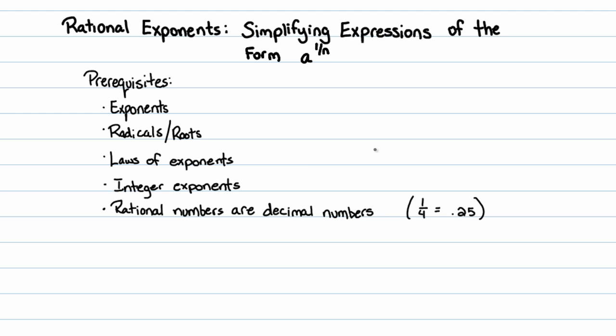Prerequisites here are going to be that you need to know everything about exponents so far, radicals, roots like the cube root and the fourth root. You need to know the laws of exponents and integer exponents, including negative and zero exponents. And finally, you need to know that rational numbers are decimal numbers, like one-fourth is the same thing as 0.25. That's going to be required for some of the problems that I do, because I know that a lot of textbooks don't have examples like that, but it's good to have examples where you have decimal exponents as well.